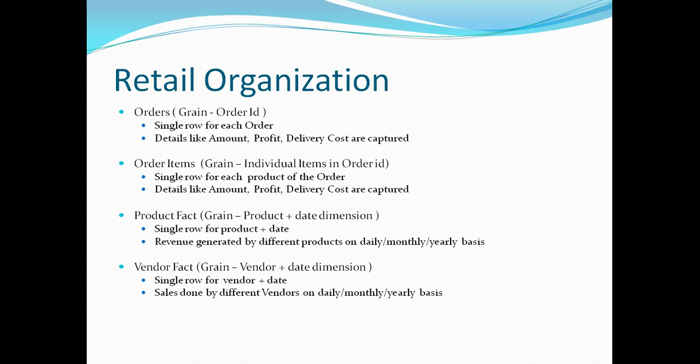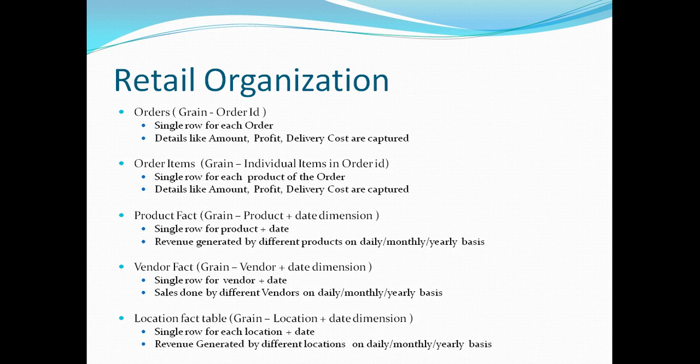I can also create a fact table based on location and date. If I'm selling products at 500 locations, I will have one row per day per location — 500 rows added daily to the location fact table. KPIs captured here include revenue generated by different locations, number of orders placed, number of orders returned, and defective products. The number of fact tables entirely depends on your business requirement.